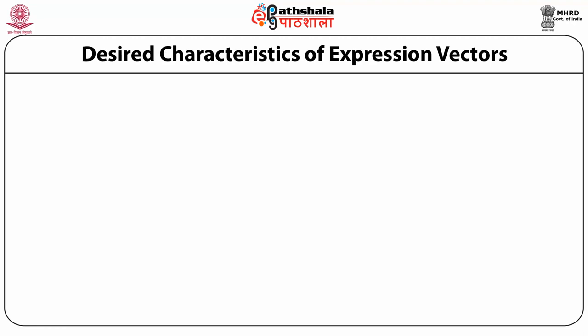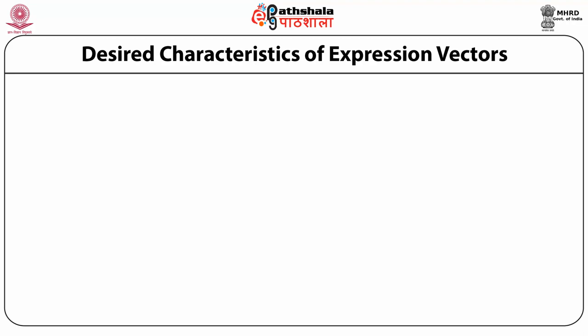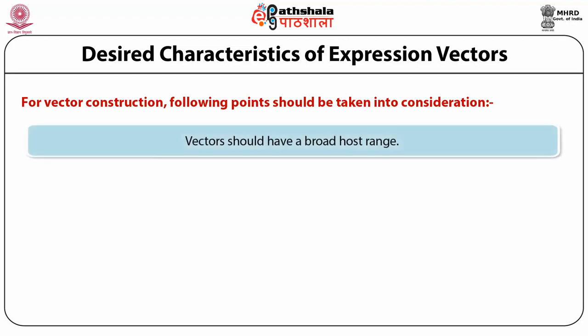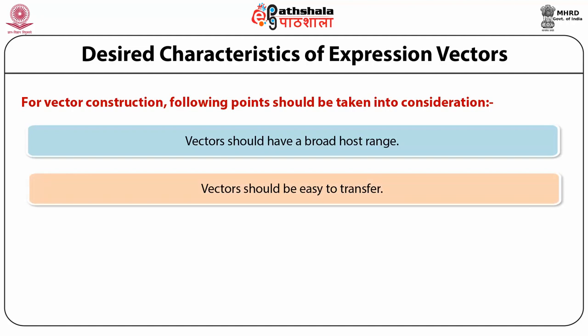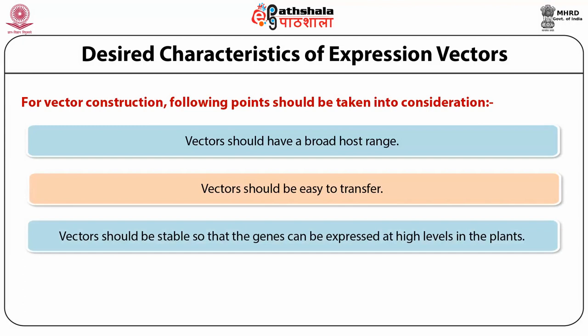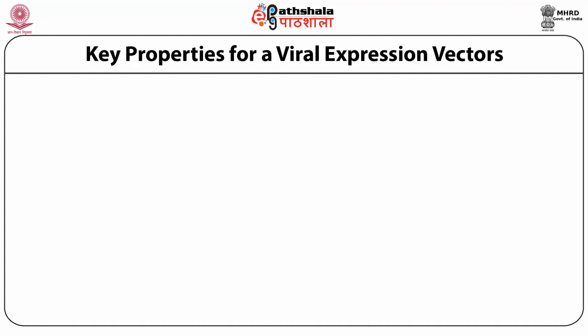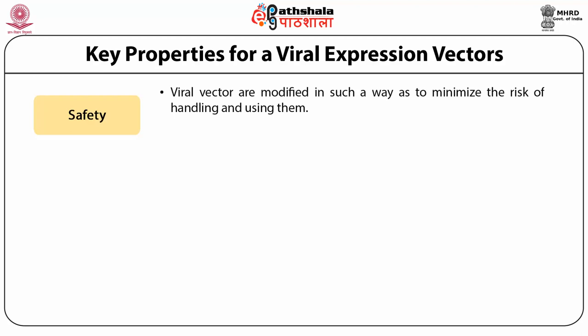Desired characteristics of expression vectors: for vector construction, the following points should be taken into consideration. First, vectors should have a broad host range. Second, vectors should be easy to transfer. Third, vectors should be stable so that genes can be expressed at high levels in plants. The key properties for viral expression vectors include, first, safety — viral vectors are modified in such a way as to minimize the risk of handling and using them, usually involving the deletion of a part of the viral genome critical for viral transmission.